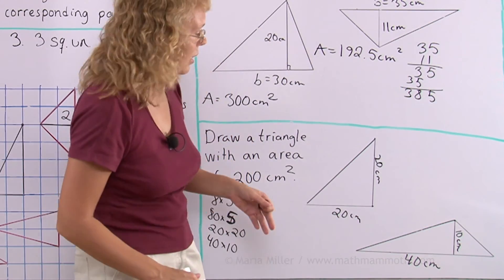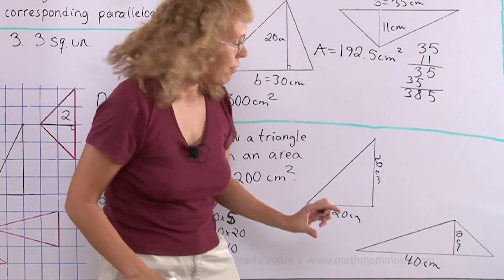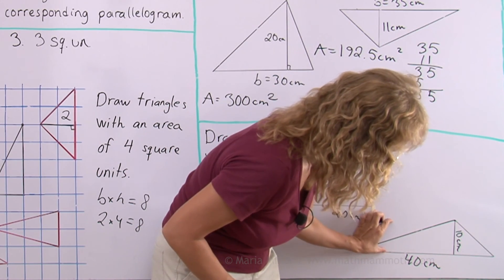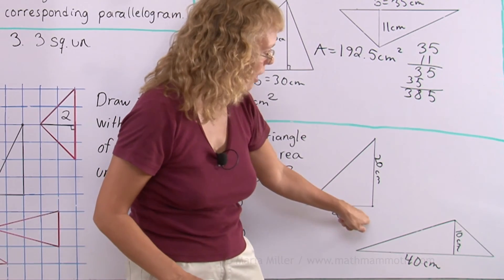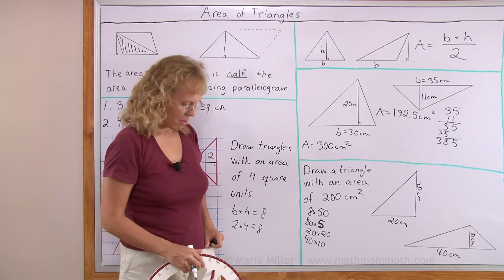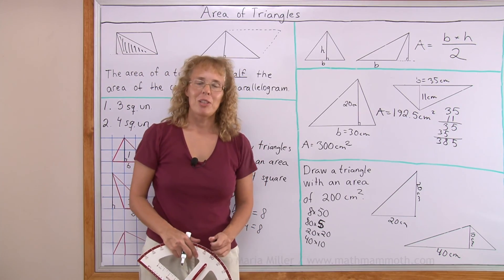And there's multitudes of possibilities with this too because I could have drawn this 10 centimeter altitude here. Or here. Or here. Whatever. The vertex of the triangle can be in any of these spots. So you get an infinite variety of triangles with the same area. Okay. Well done.